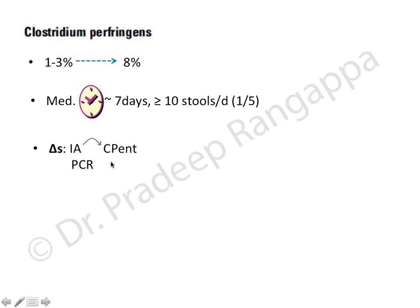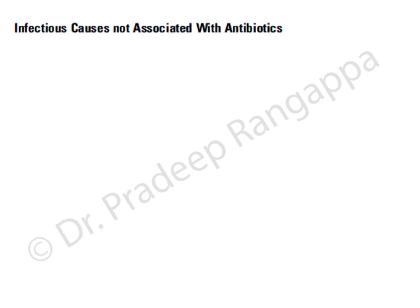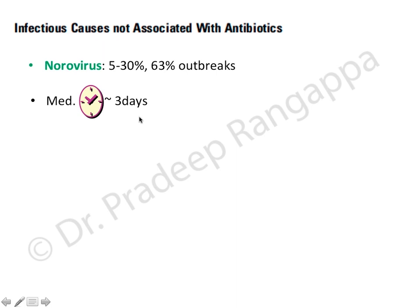Norovirus, with an occurrence rate of 5 to 30 percent, accounts for 63 percent of ICU diarrhea outbreaks. If many patients develop diarrhea simultaneously in an ICU, viral causes should be considered. Median onset is around three days after ICU admission. Other viruses causing ICU diarrhea include adenovirus, astrovirus, and rotavirus. ICU diarrhea is not only Clostridium difficile - viruses form a significant chunk.